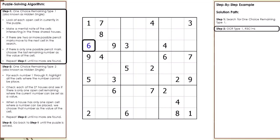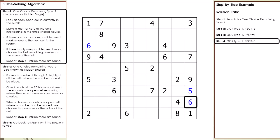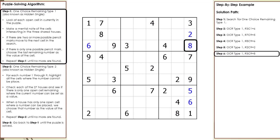We begin by searching for OCR Type 1. Cell 3,1 is set to 6. Cell 7,9 is set to 5. Cell 8,9 is set to 6. Cell 2,9 is set to 2. Cell 5,9 is set to 4.